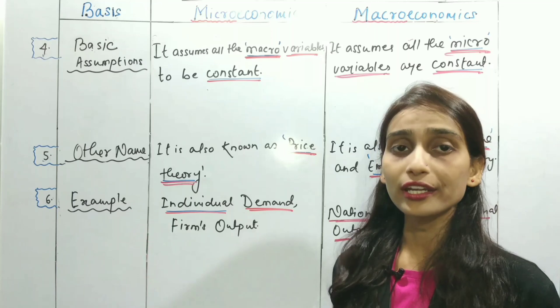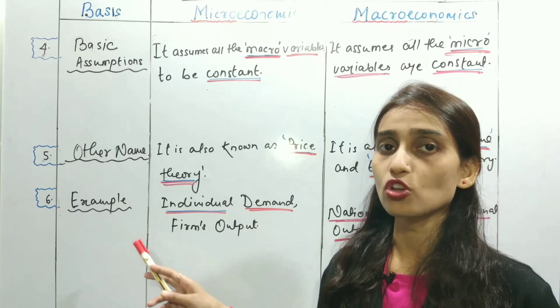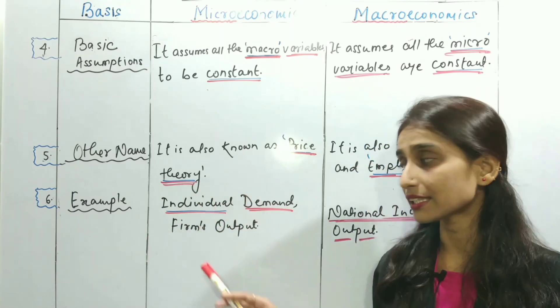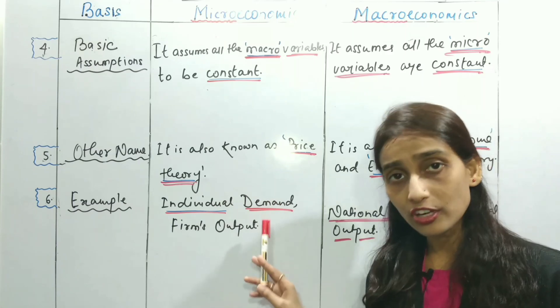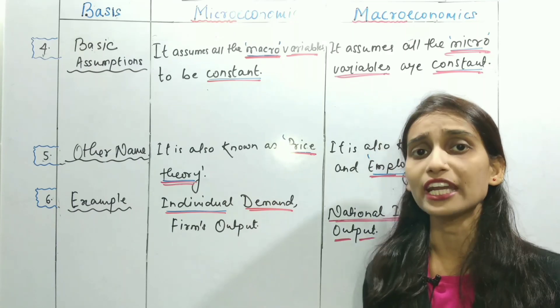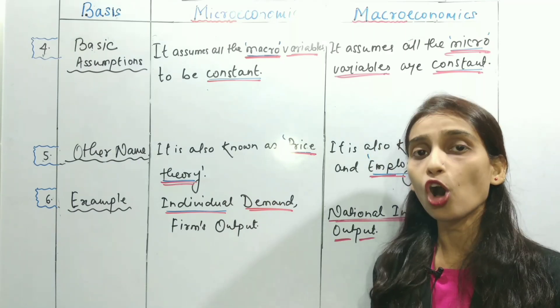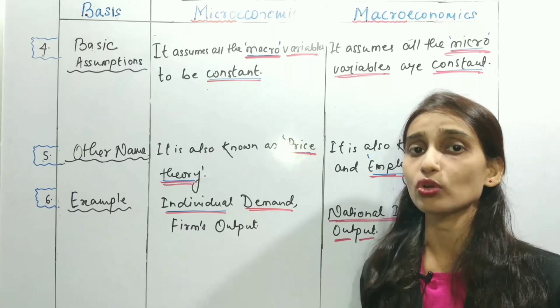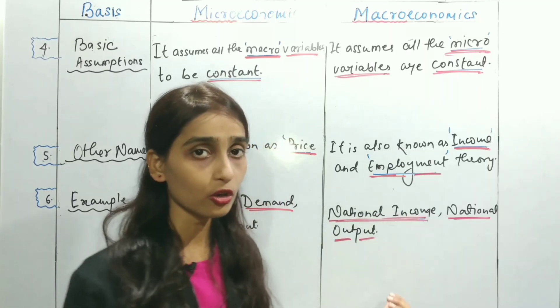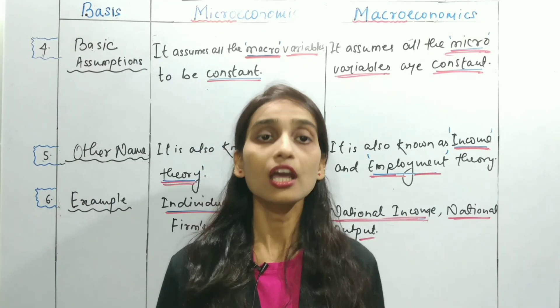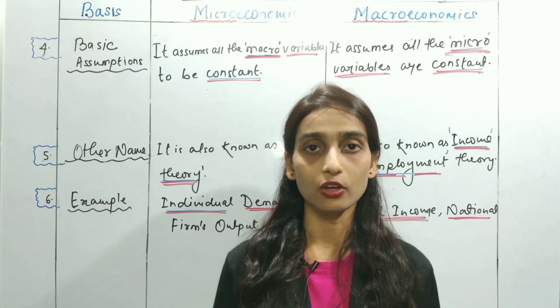The last point is on the basis of examples. In microeconomics, examples include individual demand, individual firm's output, individual income, individual expenses, and all other individual units. In macroeconomics, examples include national income, national output, and all the aggregate units of the economy.